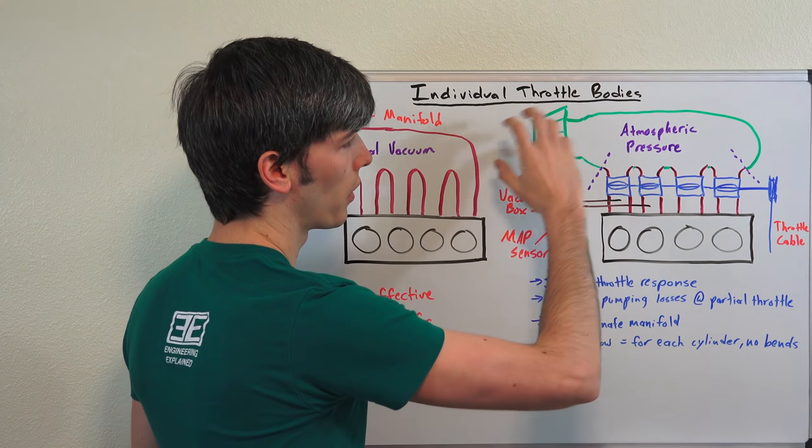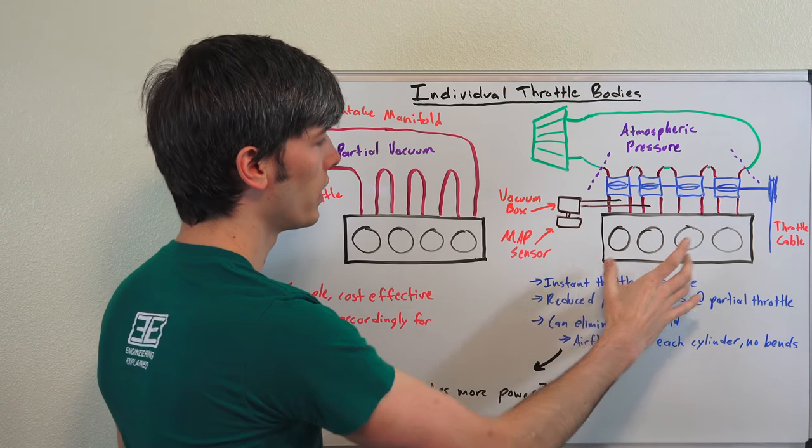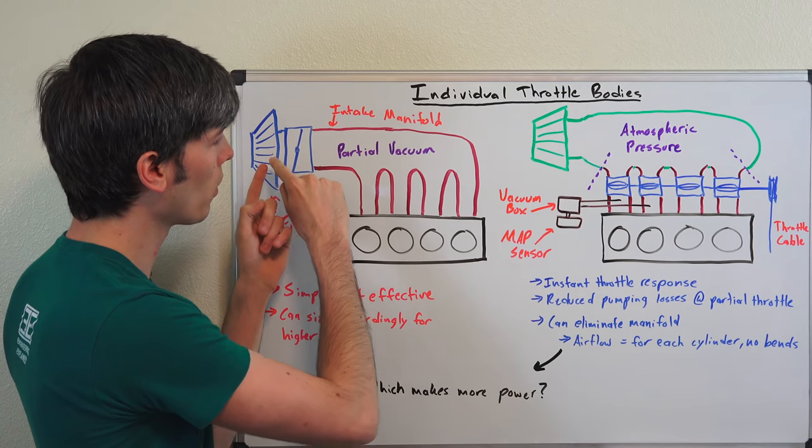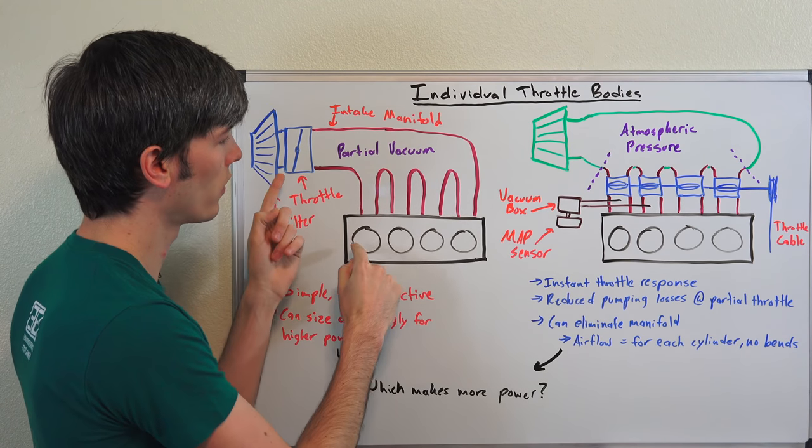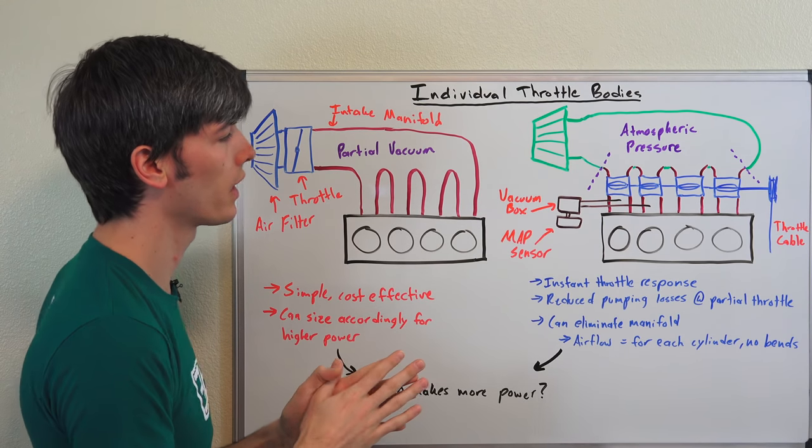But you don't need this part of the system. The point is you have atmospheric pressure directly outside each of these cylinders, versus in this case that atmospheric pressure when you floor it has to travel all the way into the cylinder rather than just traveling from right here to right here. So that's one of the big advantages.